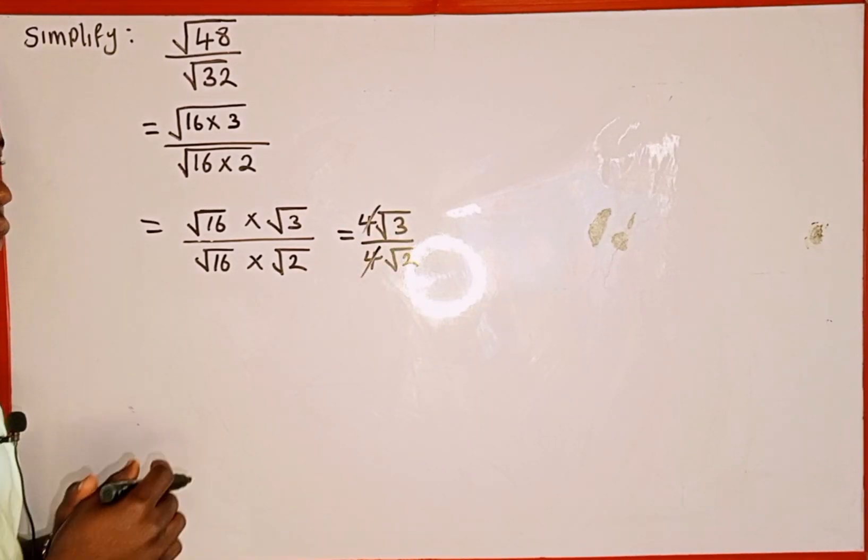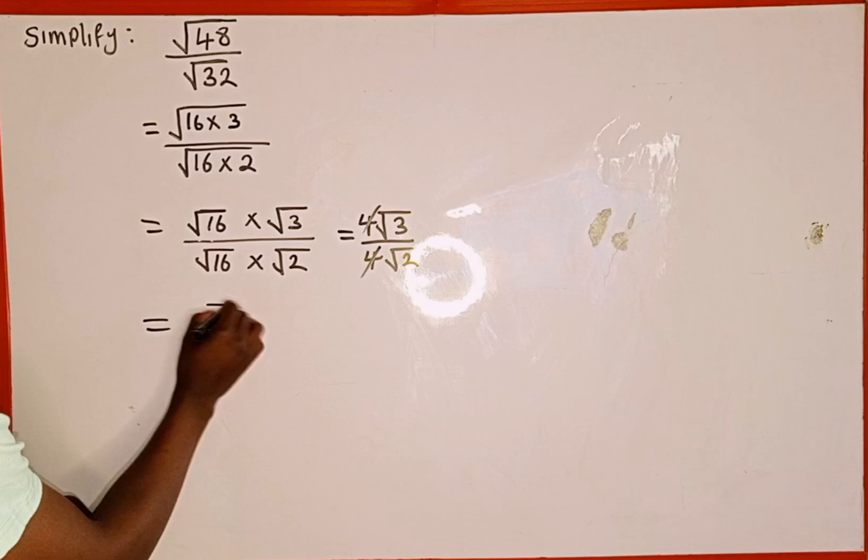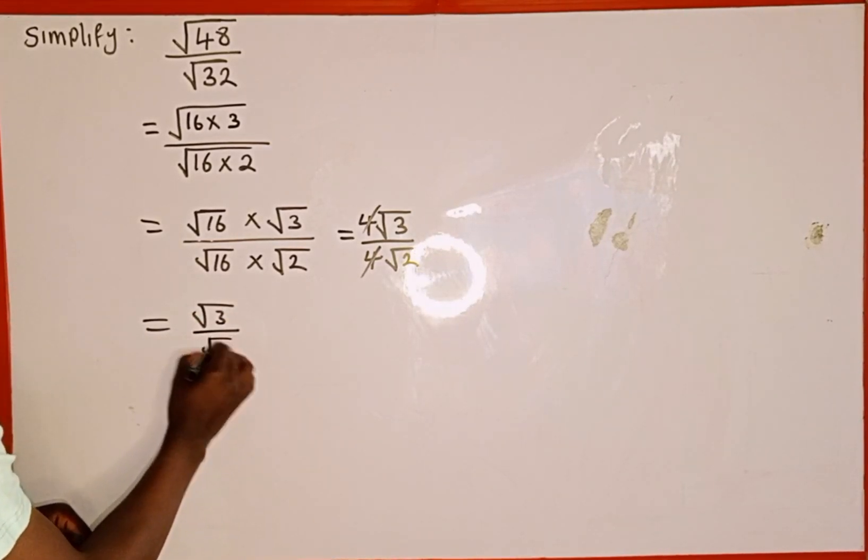Then this 4 is going to cancel out this 4. We are left with what? Square root 3 divided by what? Square root 2.